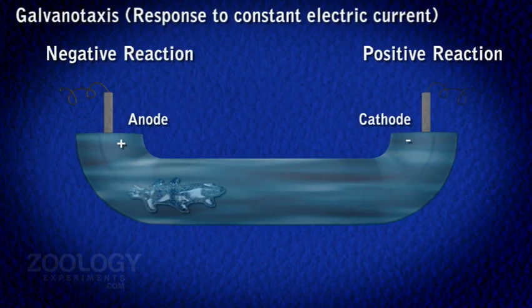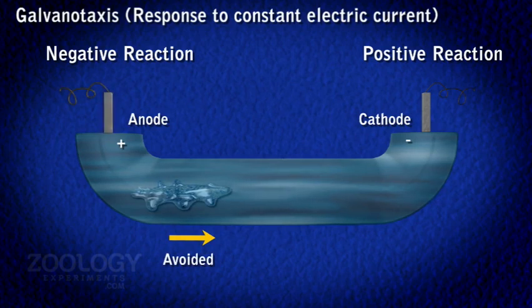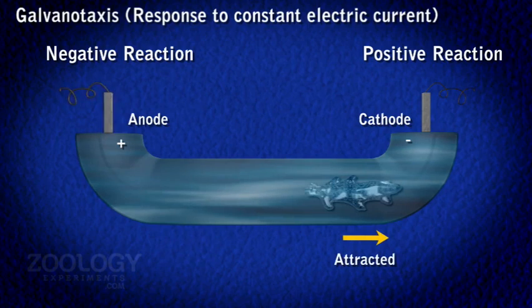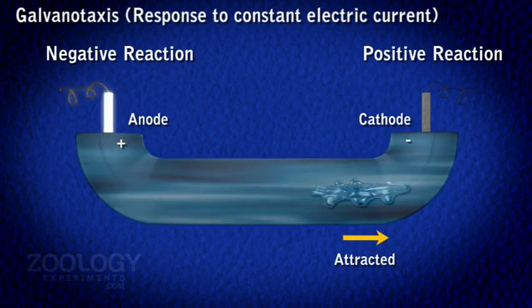Galvanotaxis: In water, if an amoeba is present and electric current is passed through, it stops moving, withdraws, and becomes globular. In a weak electric current, it moves towards the negative pole, that is the cathode, and avoids the positive pole, that is the anode.